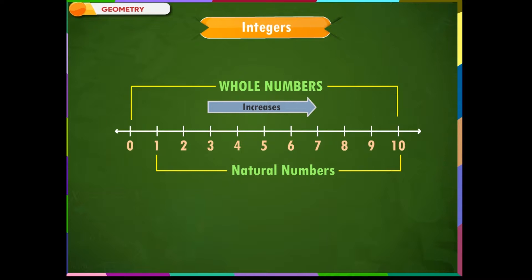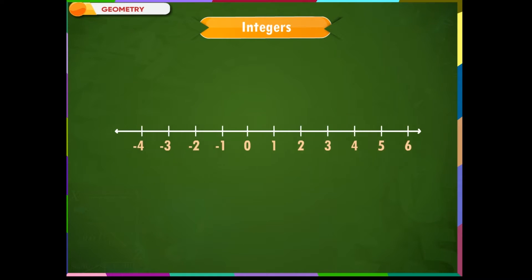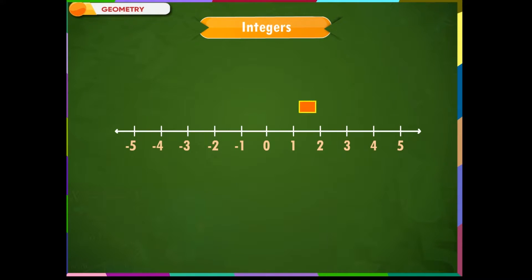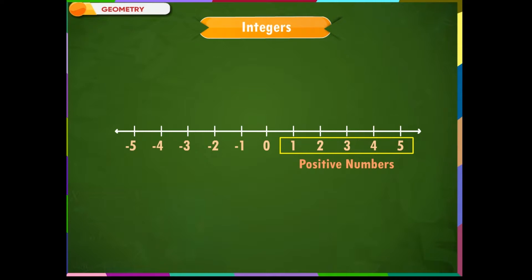What could be the numbers on the left of 0 on this number line? Yes, you are right — negative numbers. Negative numbers are the numbers which are opposite to the numbers on the right of 0, called positive numbers. When we combine all the positive numbers, 0, and all the negative numbers together, we call this set of numbers integers.